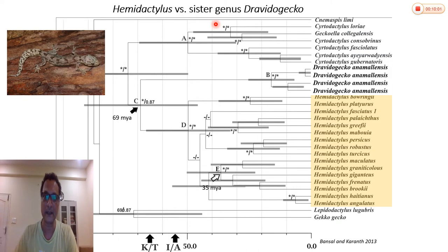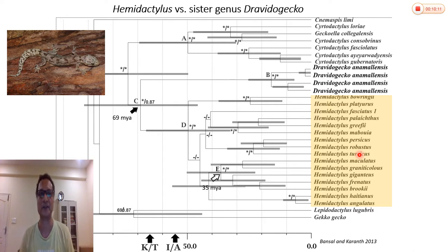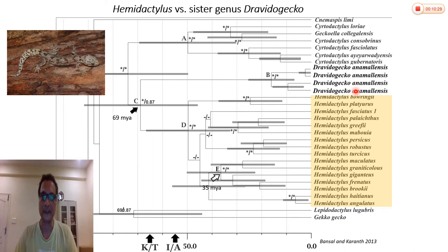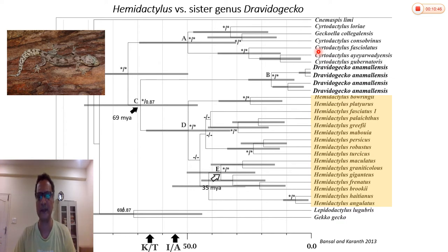In the past, there was another genus called Dravida gecko that was subsumed into Hemidactylus due to confusion about characters. But molecular phylogeny shows they are actually two separate groups — Hemidactylus is monophyletic and Dravida gecko, now consisting of multiple species, is also monophyletic. However, looking at another part of the phylogeny, genus Geckoella is nested within Sertodactylus — a situation where monophyly is not supported, which we'll come to in a minute.